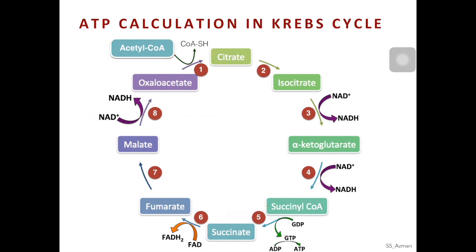I hope you understand how we obtained the numbers of ATP, NADH, and FADH2 produced in glycolysis, pyruvate oxidation, and the Krebs cycle. In the next part of the video, we are going to combine these numbers together and total them up so that we can get the overall number of ATP from one molecule of glucose during cellular respiration.